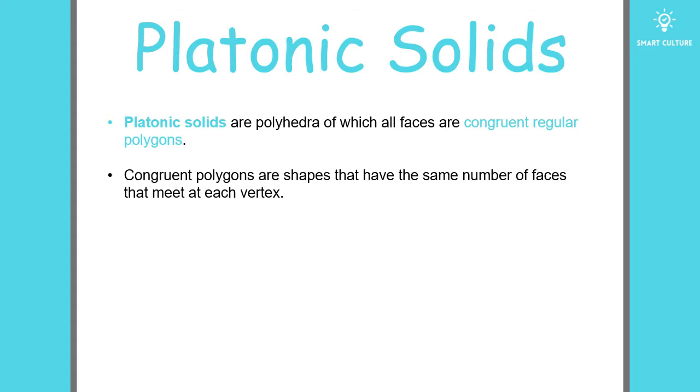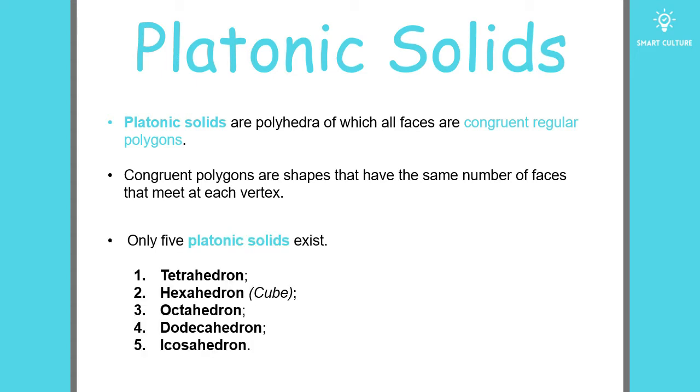Let's take a look at the types of platonic solids that exist. There are only five: a tetrahedron, a hexahedron or cube, octahedron, a dodecahedron, and an icosahedron.